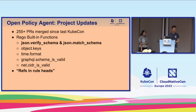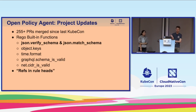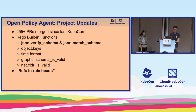A few quick project updates: we've merged over 250 pull requests since the last KubeCon. Most of the things we've added are related to the language. We've added functions for validating objects against JSON schemas, `objects.keys` for getting keys from a key-value object, time formatting, a GraphQL schema validation function, and `net.cidr_is_valid`. I'm going to dig into JSON schema verification and refs in rule heads in more detail.